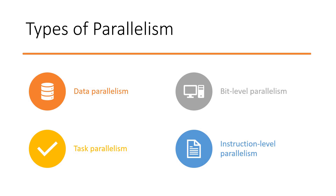There are four types of parallelism you must know: data parallelism, bit level parallelism, task parallelism, and instruction level parallelism. People are generally drawn toward instruction level parallelism, and it's very important. This is also a key interview question area — they may ask what parallelism is, what the types are, and you'll need to explain all four. We'll then go deeper into instruction level parallelism and connect it with pipelining.